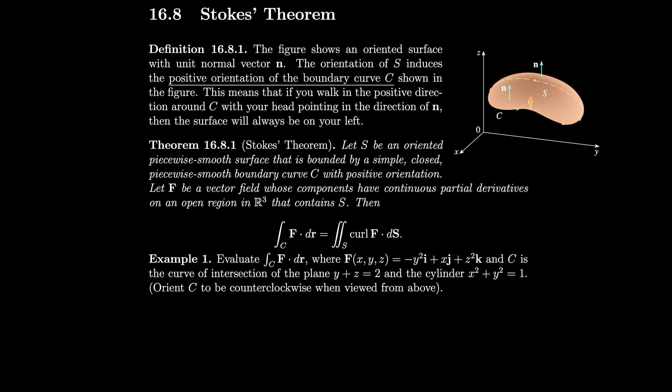Section 16.8: Stokes' Theorem. The figure shows an oriented surface with unit normal vector n. The orientation of S induces the positive orientation of the boundary curve C. This means that if you walk in the positive direction around C with your head pointing in the direction of n, the surface will always be on your left — similar to Green's Theorem where the domain inside was always on the left.